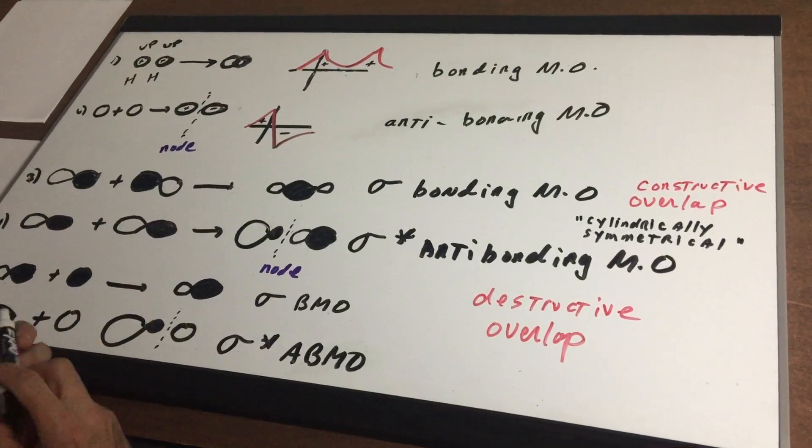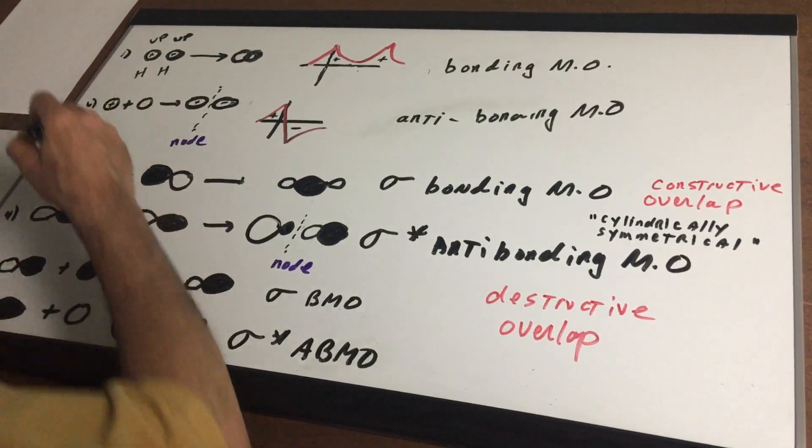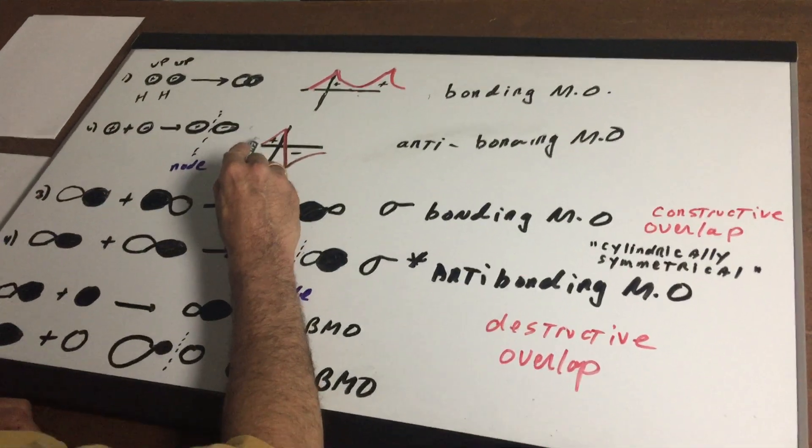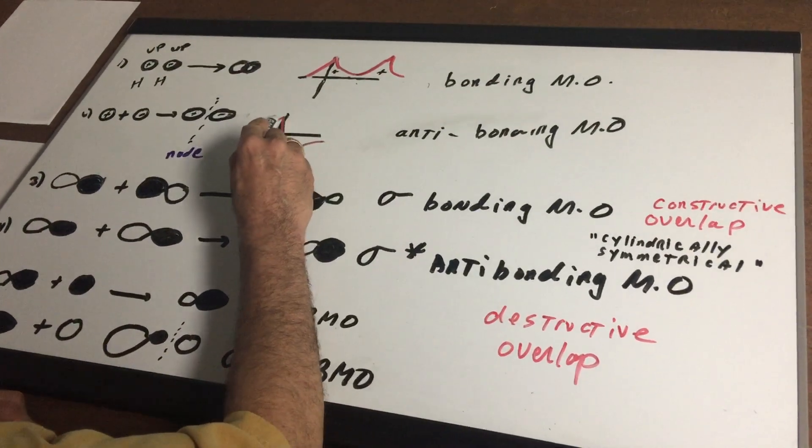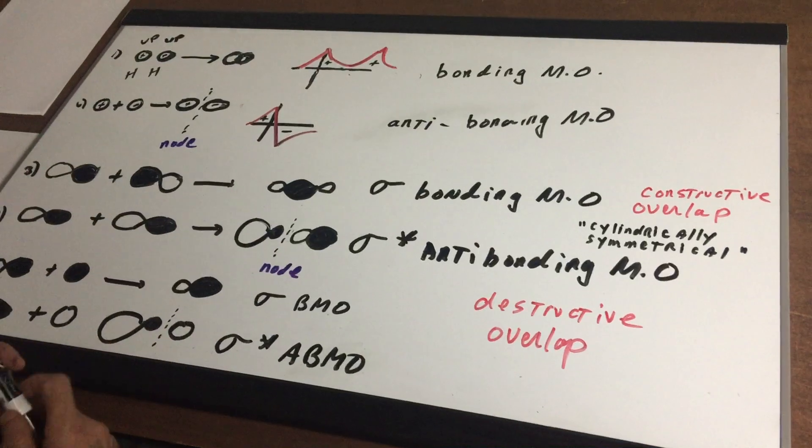Now there's another possibility and that possibility would be that a wave moves up and one wave moves down and as you can see that's depicted on this diagram here. One wave is going up and one wave is moving down.